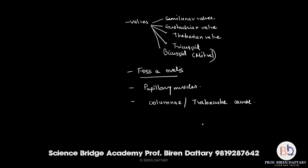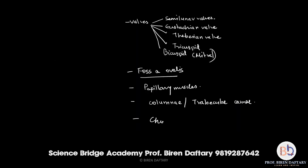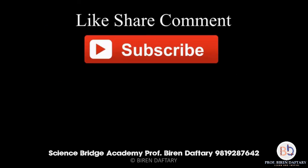The chordae tendineae are connective tissue that hold both the tricuspid and bicuspid valves in their correct position, preventing flipping of the valves. The chordae tendineae are attached to the papillary muscles, as visible in the diagram. That covers the anatomy of the internal structure of the heart — thanks for listening patiently.